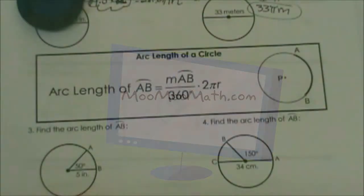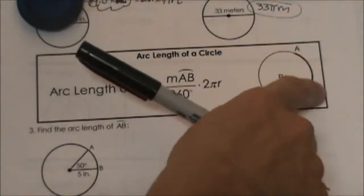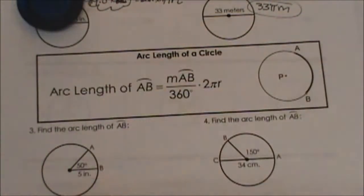What is arc length? Arc length is the length of an arc that is part of the circumference.